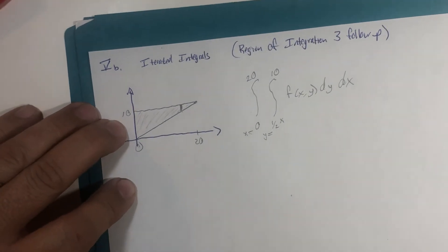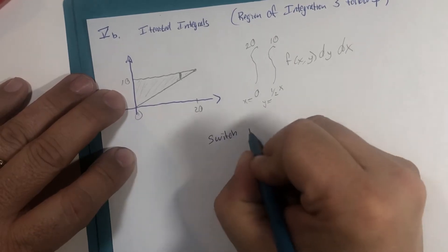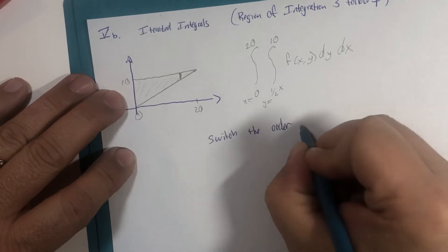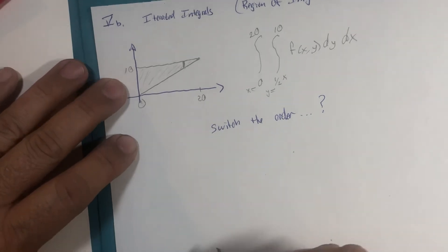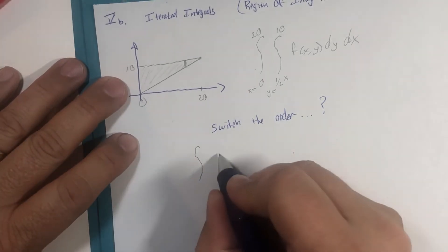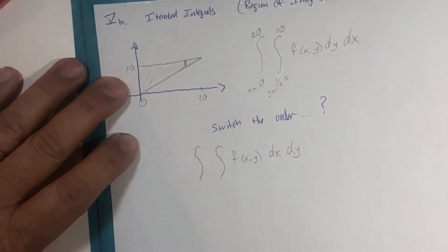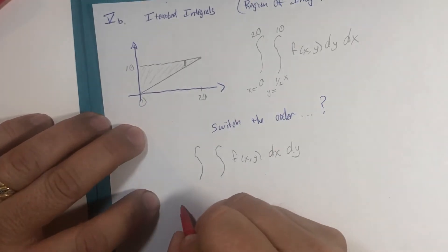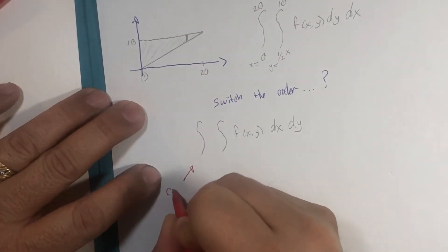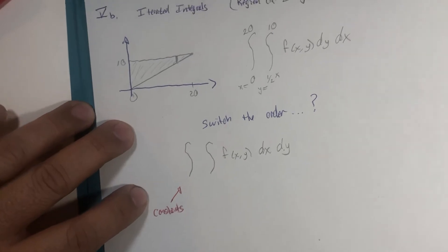So what if we were to, for this problem, switch the order of the integration? What if I were to want to write this integral f of x, but write it as dx dy, taking what we've been working on the last couple of videos, where we know that the last integration that happens must be constant so that at the very end we get a number out.